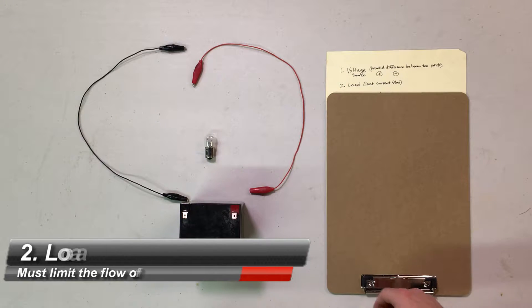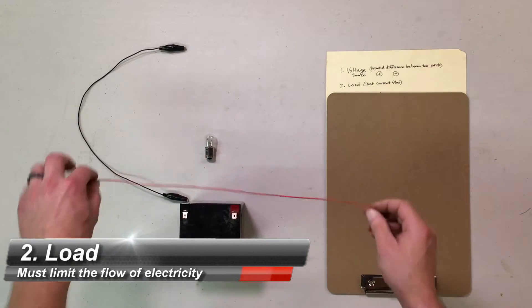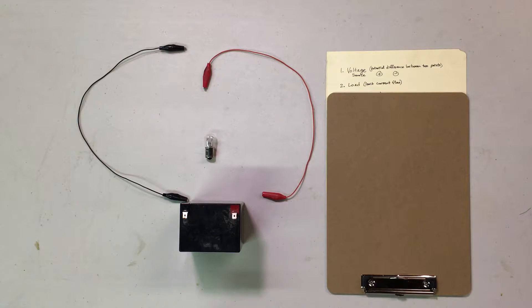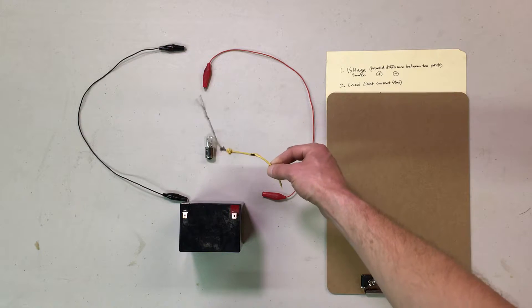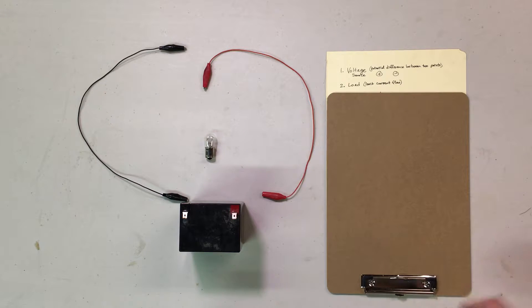The next item is a load. You cannot just connect a wire directly from one end to the other of the battery or else bad things happen, such as a fried wire. Some people refer to this as letting the smoke out of the wire. So you need a voltage source, a load.